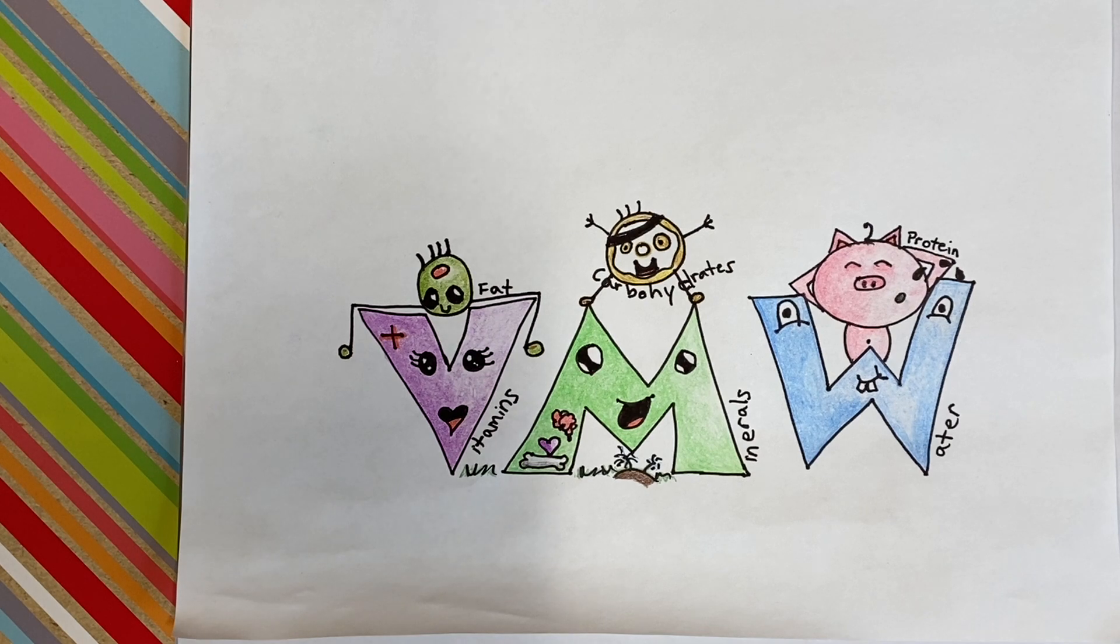They are the macronutrients and they will provide calories. So you get calories from fat, carbohydrates, and protein. So your vitamins, they help the body grow and develop normally. They help with blood clotting, the immune system, and the maintenance of healthy skin.